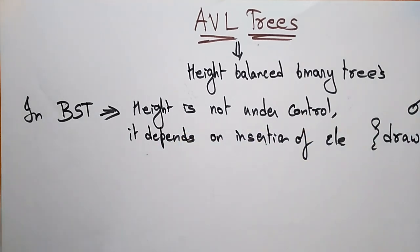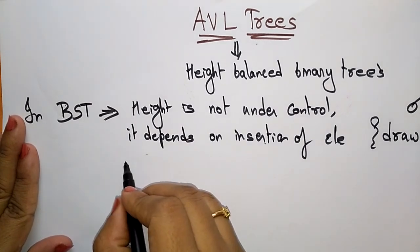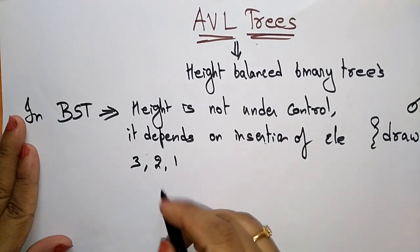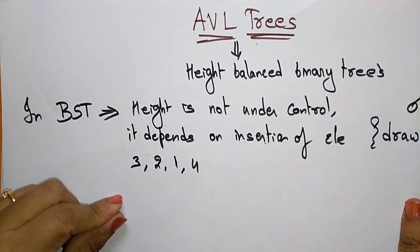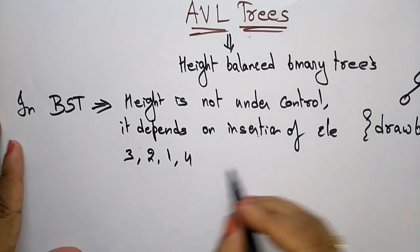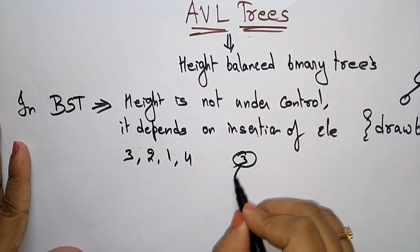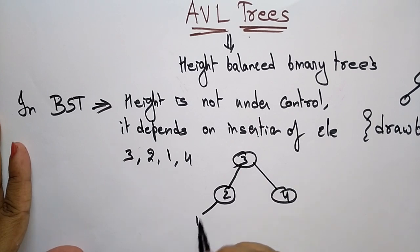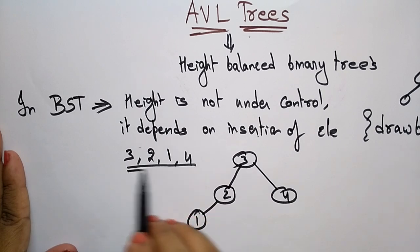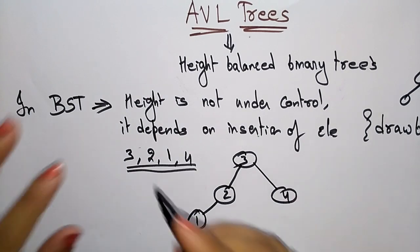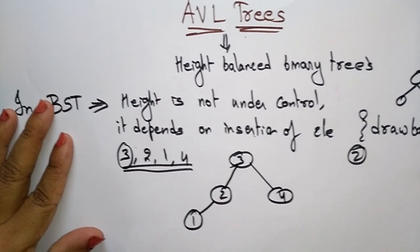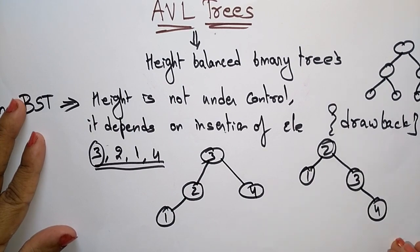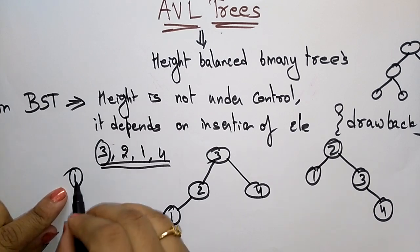Let me take a simple example with three nodes: 3, 2, 1. The binary search tree condition is the left side should be less than the root node and the right side should be greater. So if you take 2 as the root node, 1 becomes the left node and 3 is the right node.